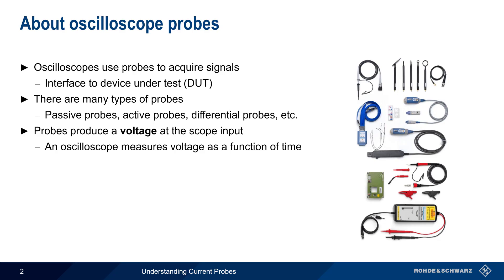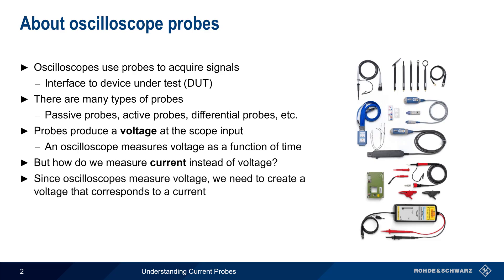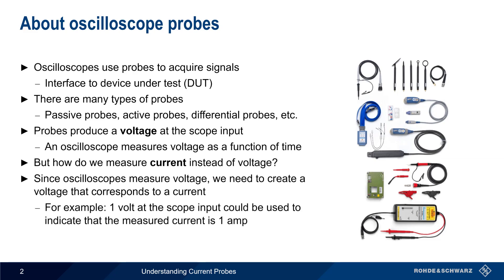This does, however, raise a question: how can we measure current as opposed to voltage? Since oscilloscopes measure voltage, we need a way to create a voltage that corresponds to a current in a consistent and predictable way. In other words, we need a way to convert a measured current into a voltage value. For example, if 1 volt were present at the scope input, this could be used to indicate a measured current of 1 amp.